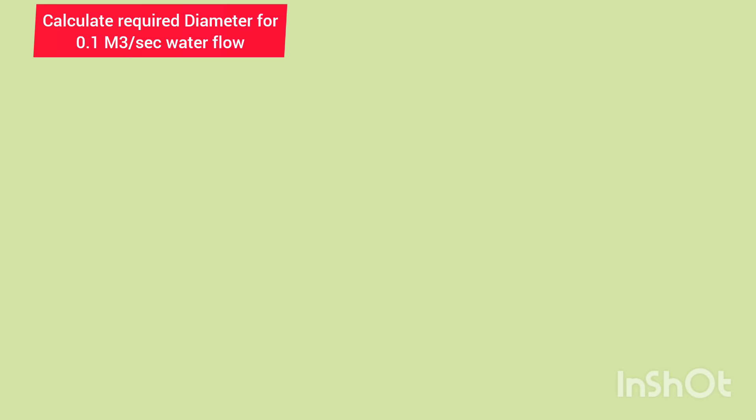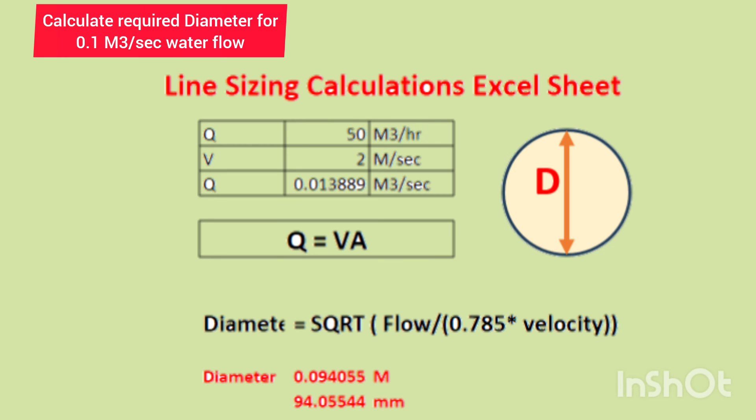Based on the factors we discussed, we can consider an optimum velocity of 2 meters per second. By putting 0.1 meter cube per second as flow Q and velocity as 2 meters per second in the diameter calculation formula, the answer is 0.095 meters or 94 millimeters.